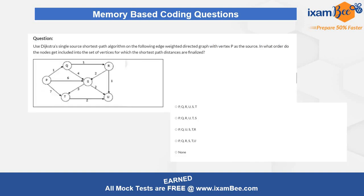The next question is related to Dijkstra's single source shortest path algorithm. You will have some graphical visuals and you have to apply the entire algorithm to get the correct output. Here you have a particular graph and you have to apply Dijkstra's single source shortest path algorithm starting from node P, traversing to get the shortest path distances, and answer the correct sequence of doing it.